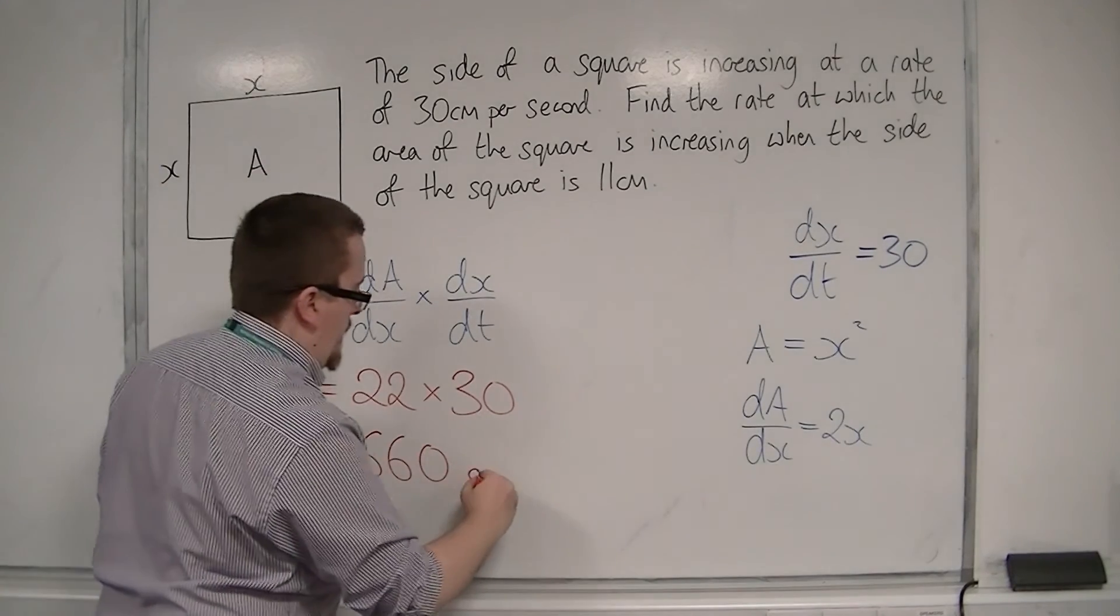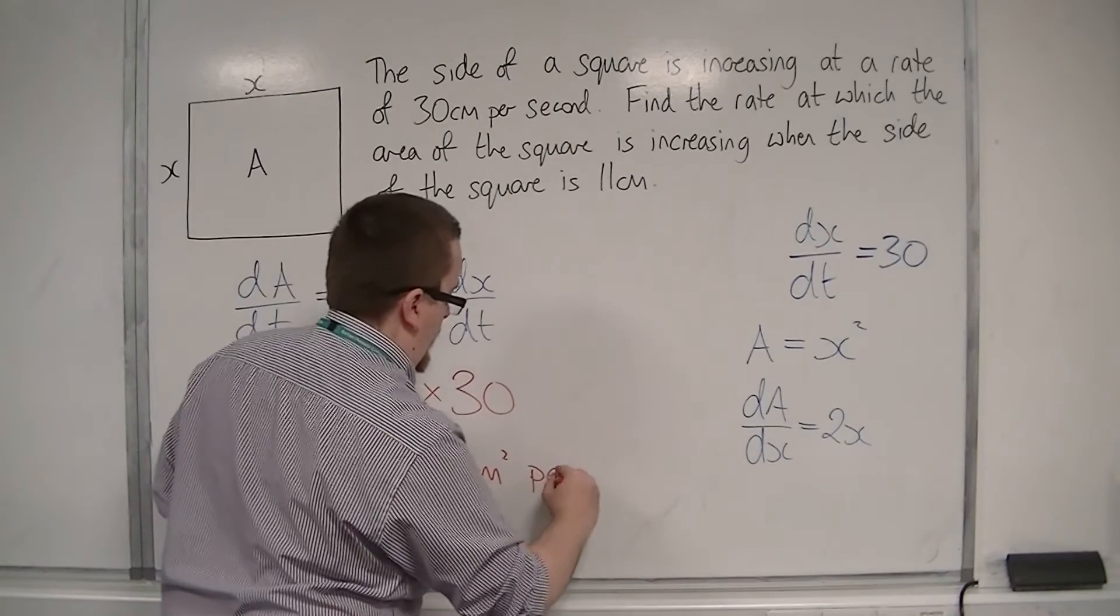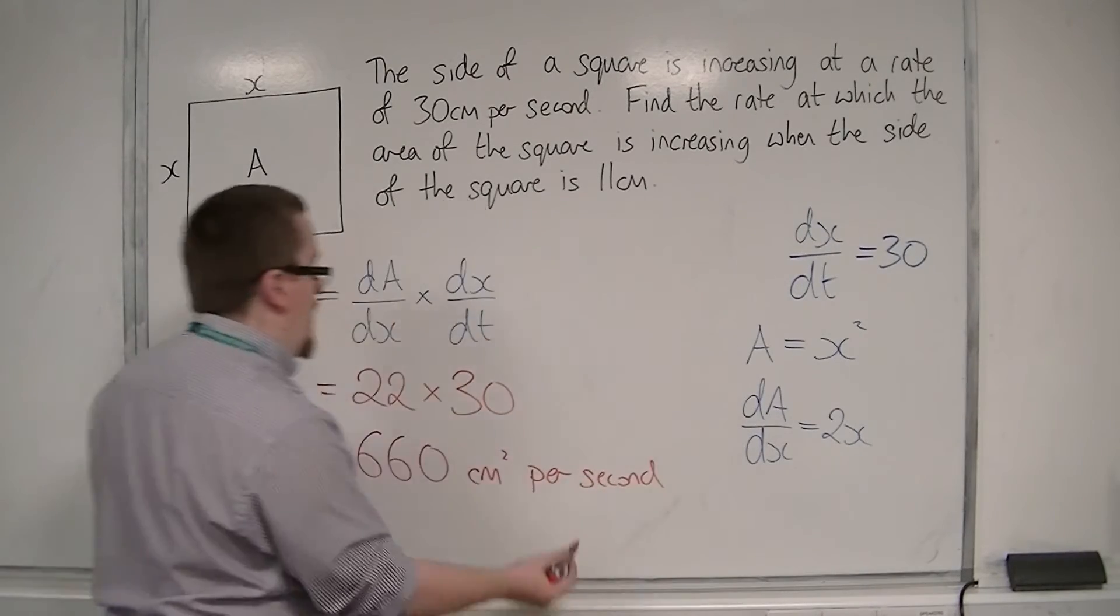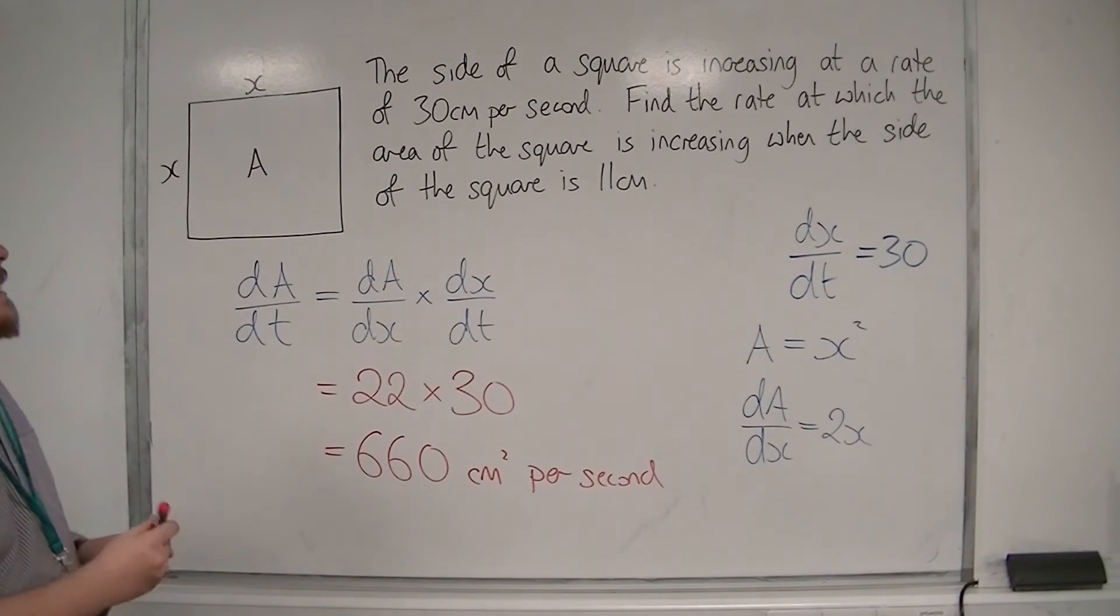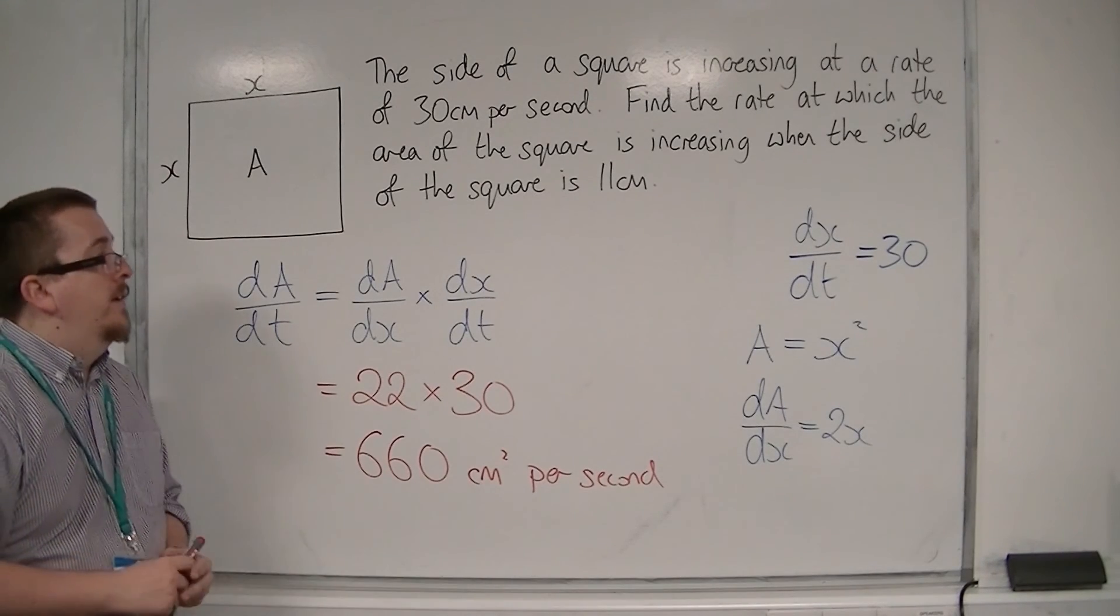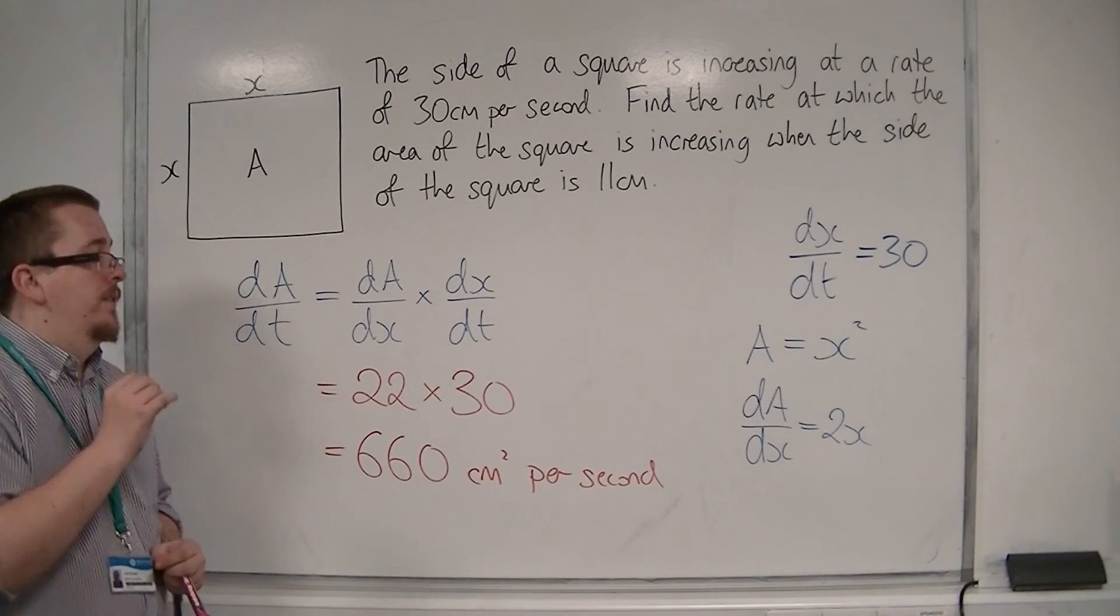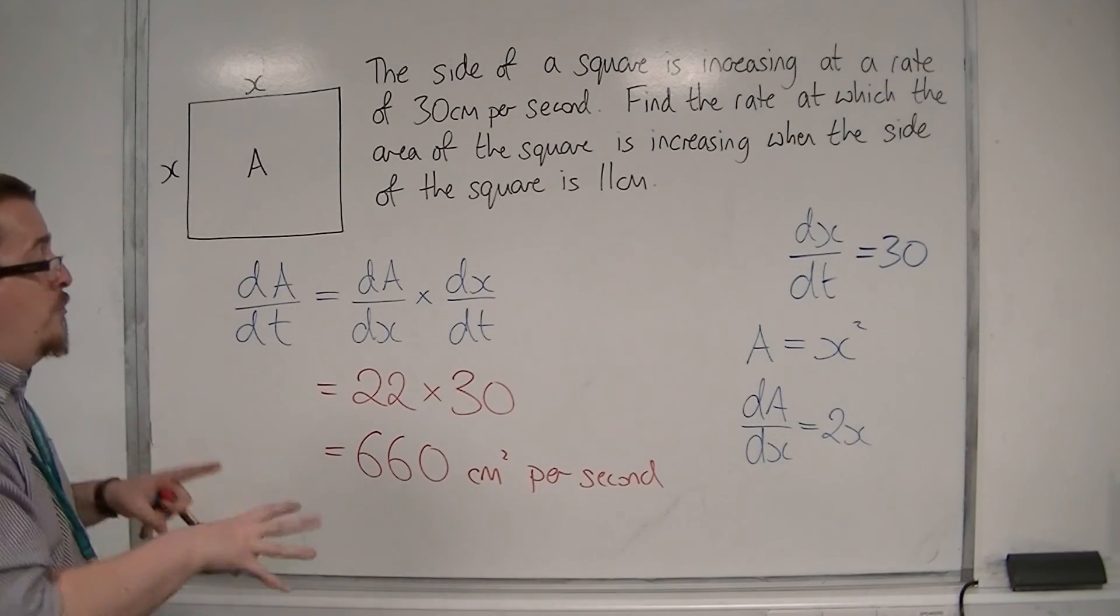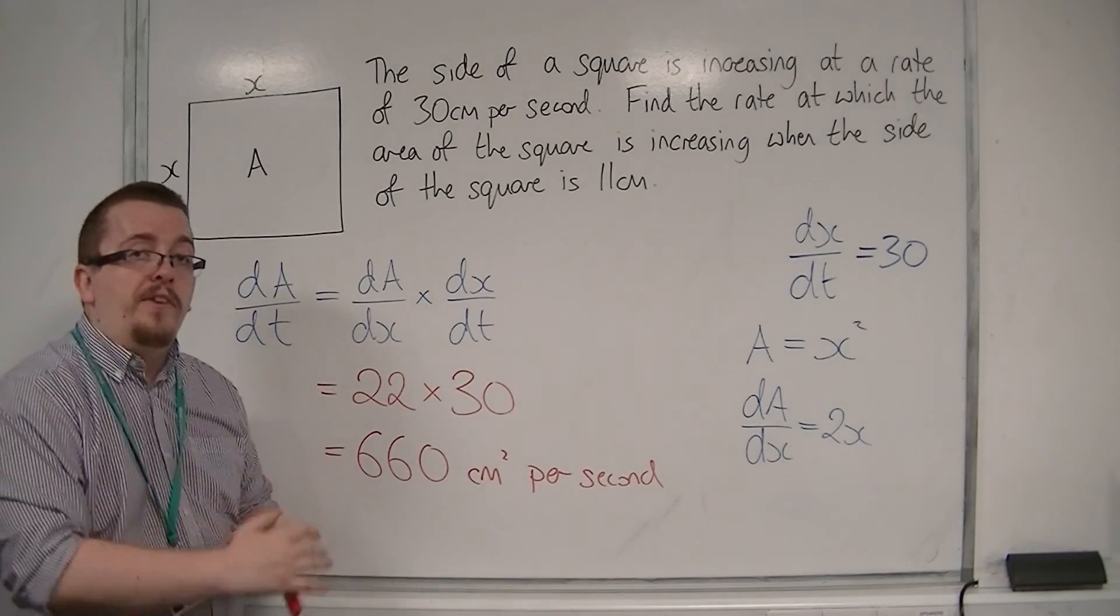So that's the rate at which the area of the square is increasing when the side is 11 centimetres. So it is increasing at 660 centimetres squared per second.